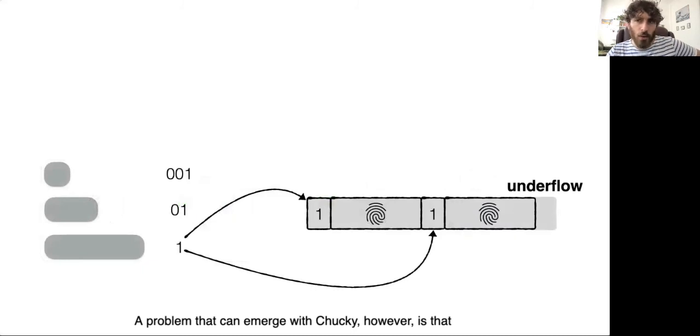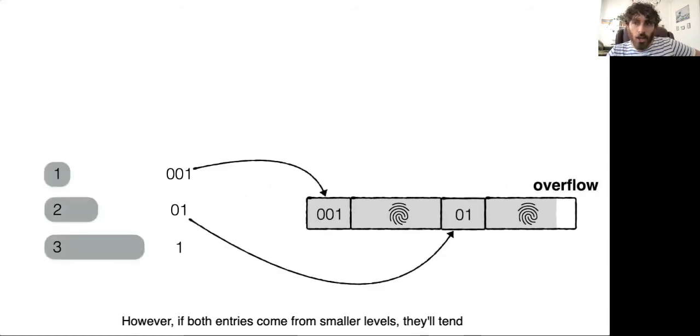A problem that can emerge with Chucky, however, is that the variable size level IDs can lead to alignment issues within buckets. For example, if both entries within a bucket come from the largest level, they'll have shorter codes, which can lead to an underflow. However, if both entries come from smaller levels, they'll tend to have longer codes, which could lead to an overflow.